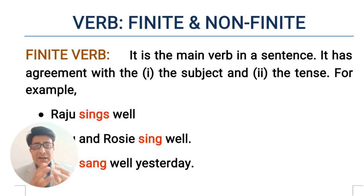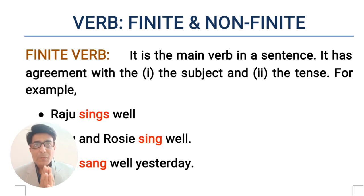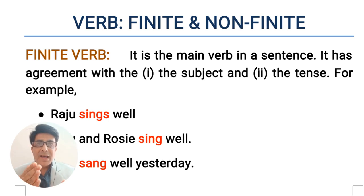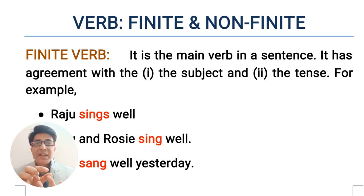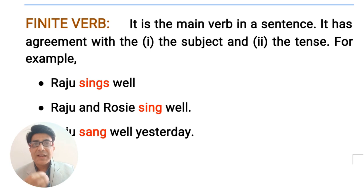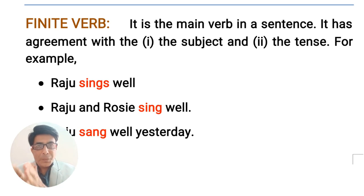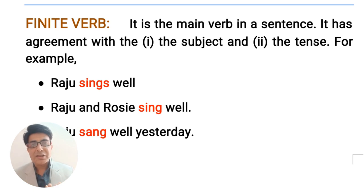Now let's discuss another division of the verb, and that is finite verbs and non-finite verbs. What is a finite verb? It is, in fact, the main verb in a sentence. A finite verb has some agreement with two things: number one, the subject, and number two, the tense. So finite verbs are the main verbs in the sentence which are found after the subject and which also agree with the type of subject and the type of tense used in the sentence.